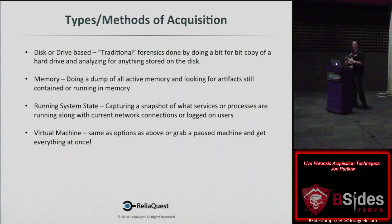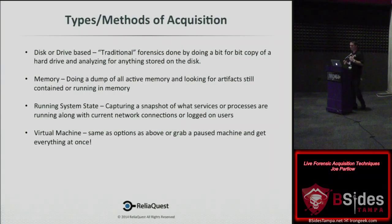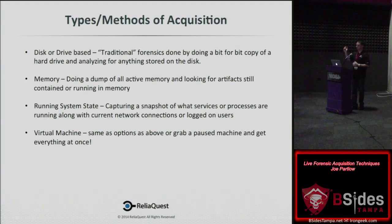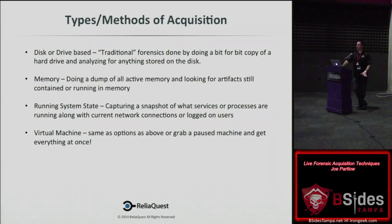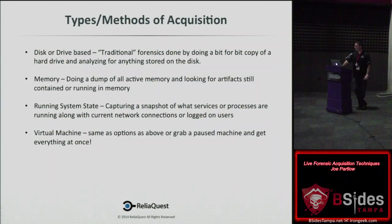Let's recap the different types of acquisition methods. Traditional disk or drive-based acquisition goes back decades — it's a bit-for-bit copy of the hard drive. You take the image back to your lab, mount it read-only, or if it's a VM image maybe mount it that way and look at it. It's valuable, but there are other options.